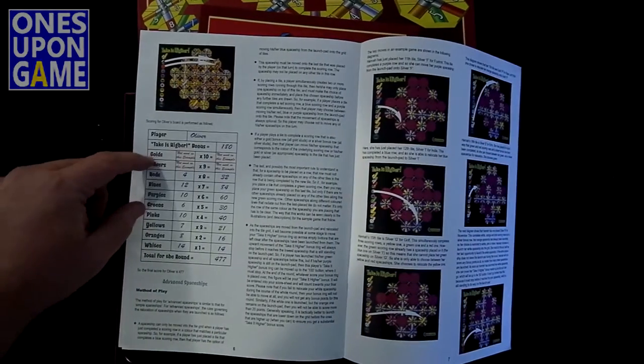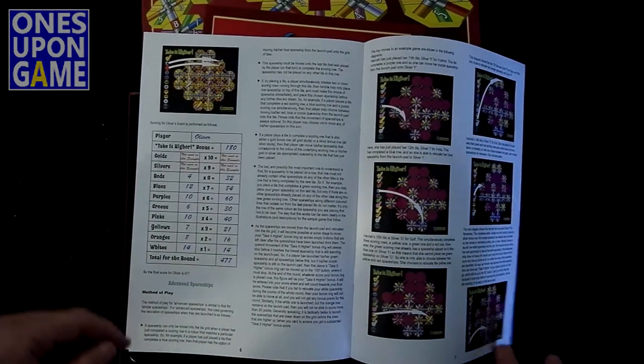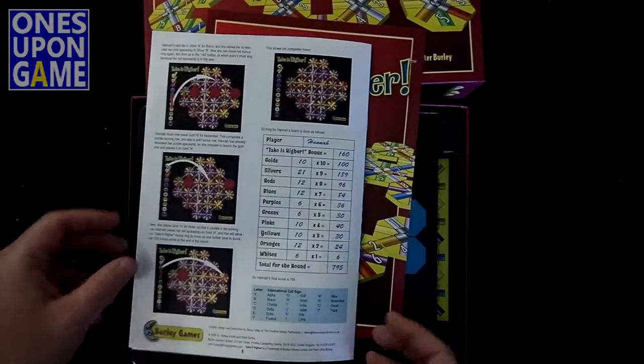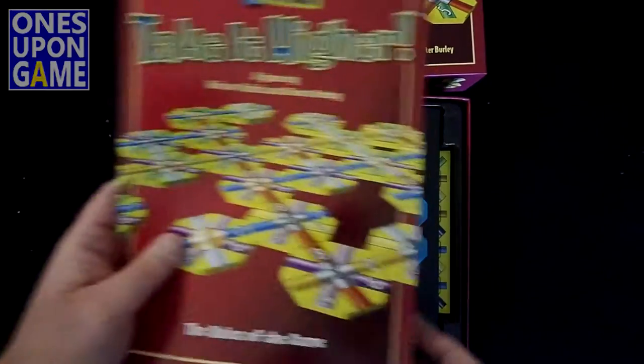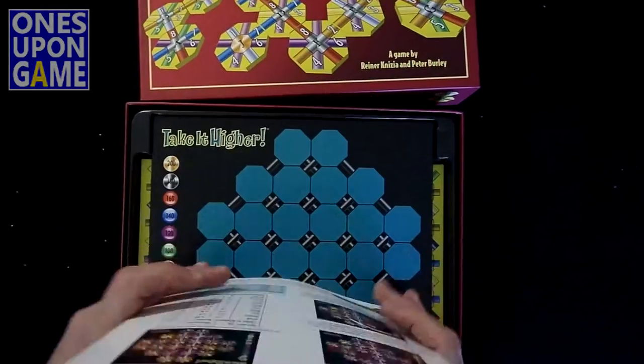Now we say you score the number of gold, silvers, reds, blues, et cetera, what color lines you get. So it looks like it's going to be multiplayer solitaire, which makes it easy to play, obviously for one player.